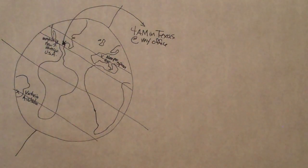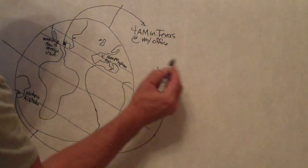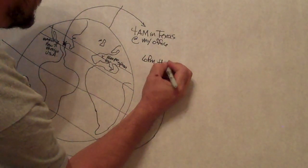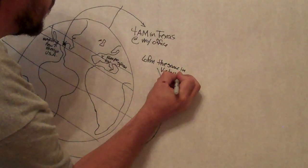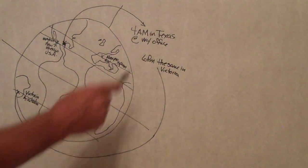4 a.m. Let me go ahead and do this. Because normally what I do, we're at 4 a.m. But I wake up at 3 a.m., but we'll just do the 4 a.m. 4 a.m. in Texas is 6 p.m. the same day in Australia, in Victoria. 4 a.m. in Texas, 6 p.m. in Victoria.